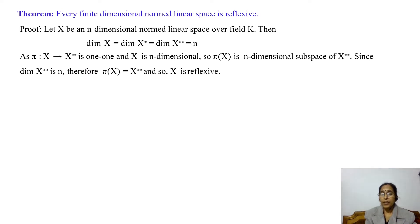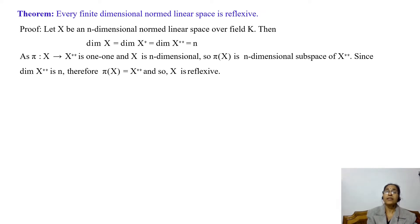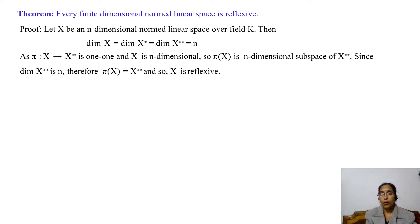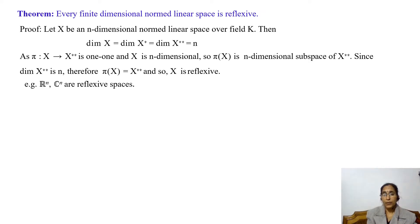As the natural embedding π from x to x** is one-to-one, and as x is n-dimensional, its image π(x) is an n-dimensional subspace of x**. Since dimension of x** is n and π(x) is a subspace of x** also of dimension n, we must have π(x) equal to x**. So we have shown that π is onto, meaning x is reflexive. From this theorem we can cite examples: ℝⁿ and ℂⁿ are reflexive spaces for different values of n.